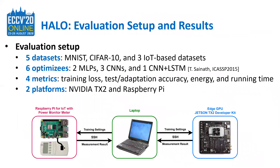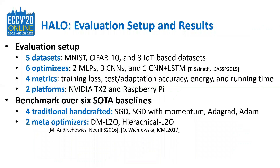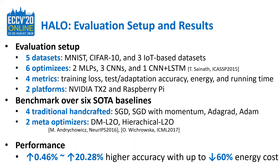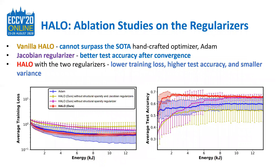To evaluate our proposed HALO, five datasets including MNIST, CIFAR-10, and three IoT-based datasets, six different optimizees, four metrics, and two platforms are considered in the experiments. We not only take training loss and test accuracy into consideration, but also report the energy and running time measured on state-of-the-art IoT hardware. When comparing with six specialized optimizers — including four traditional hand-crafted optimizers and two meta optimizers — HALO could bring higher accuracy with up to 16% less energy cost, and each component in HALO plays an important part in the boosted performance.